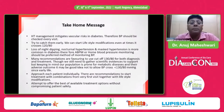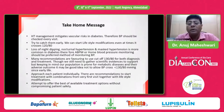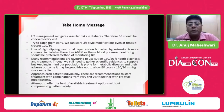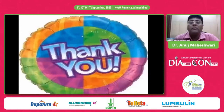Nocturnal hypertension and non-dipping carry the worst prognosis regardless of 24-hour blood pressure. Take-home messages: hypertension management mitigates vascular risk in diabetes; blood pressure should be checked at every visit; start lifestyle modification even when BP crosses 120/80; loss of night dipping, nocturnal hypertension, and masked hypertension are more common in diabetes, so ambulatory or home blood pressure monitoring should be preferred. Many guidelines favor a cutoff of 130/80 for both diagnosis and treatment. Given that our population is prone to metabolic diseases, it may be a good idea not to allow blood pressure to cross 130/80 from the beginning of life. Approach each patient individually, start combination treatment from the first visit together with lifestyle modification, and attempt to offer the best available treatment options without compromising patient safety.